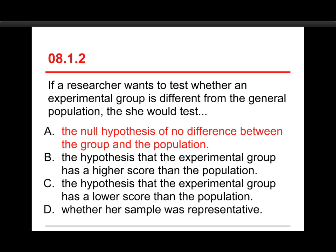Well, the answer on this one is a, the null hypothesis of no difference between the group and the population. The reason for this is that we're doing what's called null hypothesis significance testing, and we test the null. We test sort of the opposite of what we want to see if we have data that seems to be an exception to it.